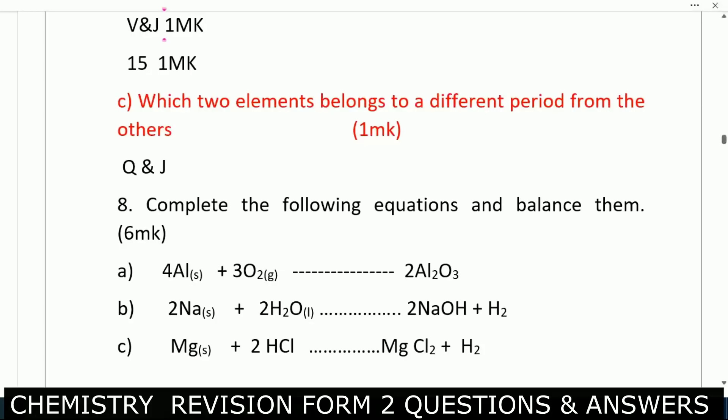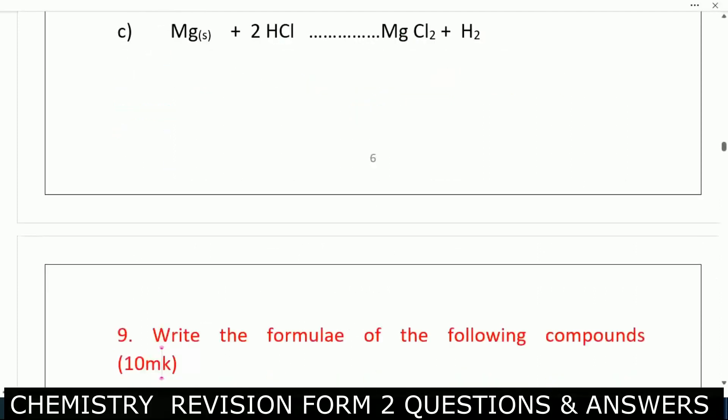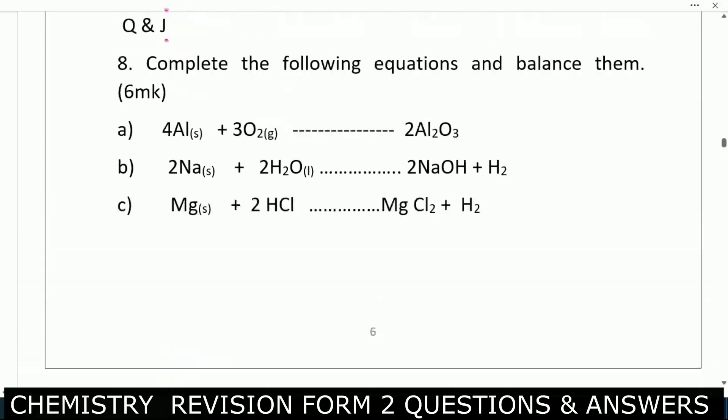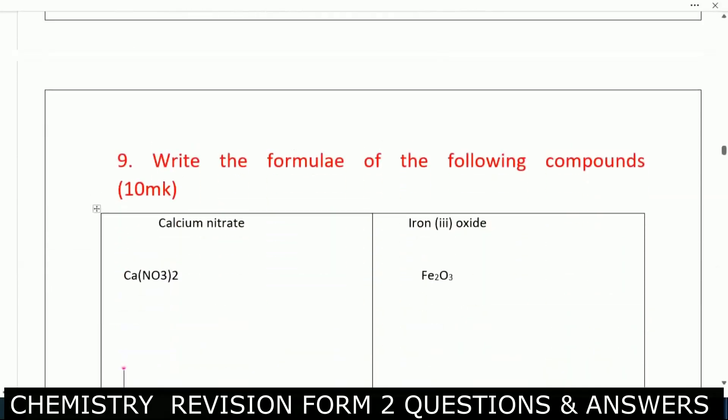Complete and balance the following equations: aluminium plus oxygen gives aluminium oxide; sodium plus water gives sodium hydroxide and hydrogen gas; magnesium chloride plus hydrogen gas. You should know how to balance these equations by doing a lot of practice. Get many equations and balance them — the more you try, the better you become.